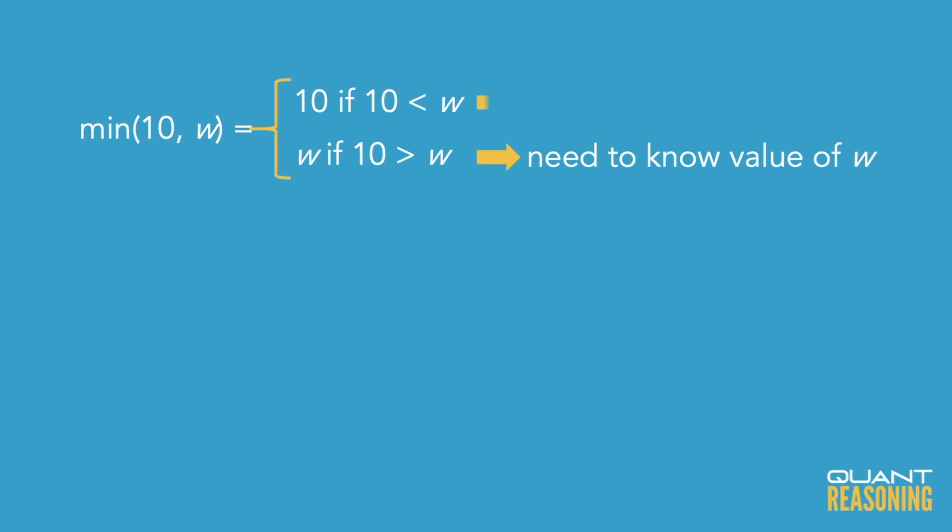So if we can show that 10 is the smaller of the two numbers, we're done. If we find out that w is the smaller of the two numbers, then we can't answer the question unless we know the exact value of w.